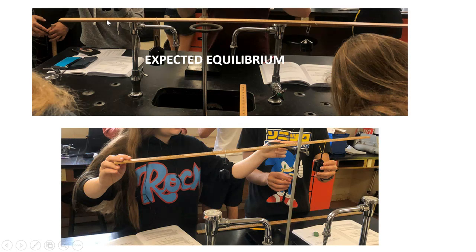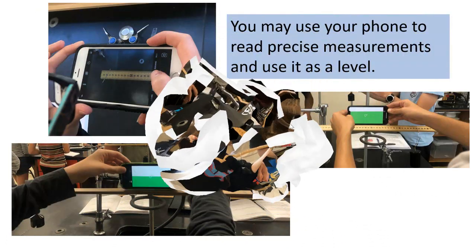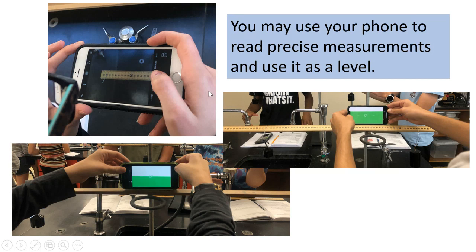The expected equilibrium is when your midi stick is horizontal and parallel to the lab table. Here you can see the midi stick with two weights of different masses, with the fulcrum positioned so the student can bring the system into equilibrium. A couple of useful cell phone tools: take a picture of your measurements to record precise values in your data table, and use a level app to verify that your midi stick is horizontal and parallel to the lab table.